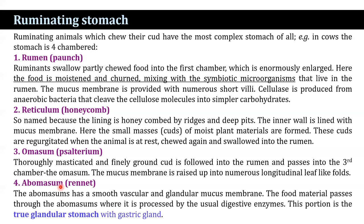The third chamber, the omasum, receives the thoroughly masticated and ground cud from the rumen; its mucous membrane is raised into numerous longitudinal lip-like folds. The fourth chamber, the abomasum, also known as the rennet stomach, has a smooth vascular glandular mucous membrane. Food passes through the abomasum where it is processed by the usual digestive enzymes. This portion is the true stomach because it contains the gastric glands.